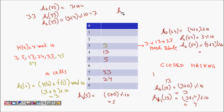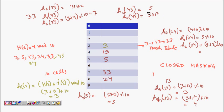For 45: h_0(45) = 45 mod 10 = 5, but cell 5 is occupied. h_1(45) = 5 + 1² mod 10 = 6, and cell 6 is empty, so 45 is placed at cell 6.